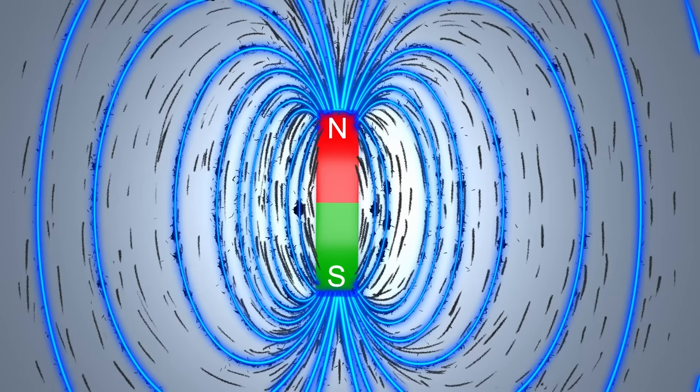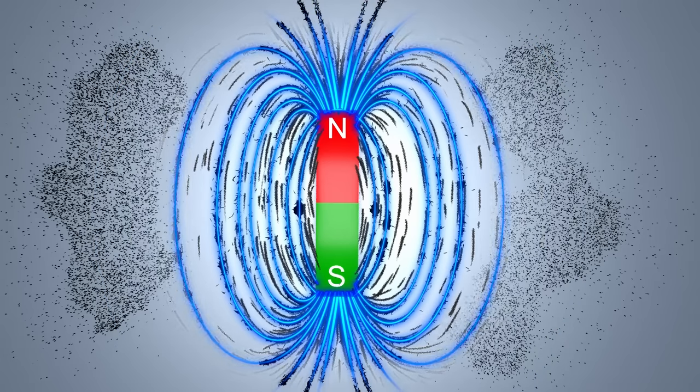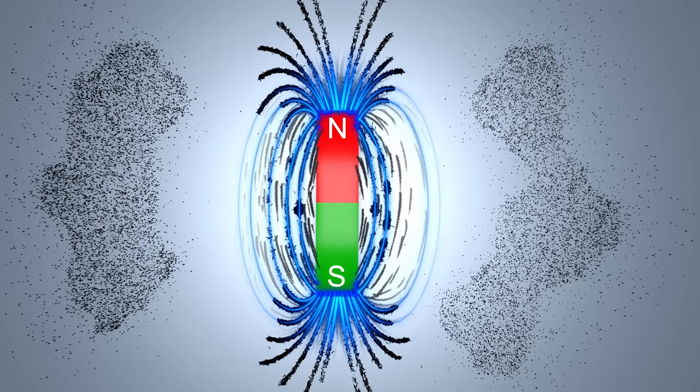But if the photon was a lot more massive, then you would see a different pattern. Depending on the exact details, it might be that the range becomes so short that the magnet only affects the most nearby iron dust, and has no effect on the dust further away.